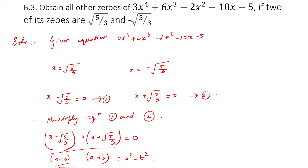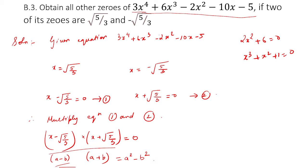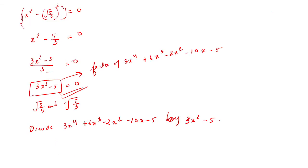The degree of this polynomial is 4, which means it will have 4 zeros. The highest degree of the given polynomial determines the number of zeros it will have. We already know 2 zeros, so we have to find the remaining 2 zeros. Let us divide 3x squared minus 5 into 3x to the power 4 plus 6x cubed minus 2x squared minus 10x minus 5.